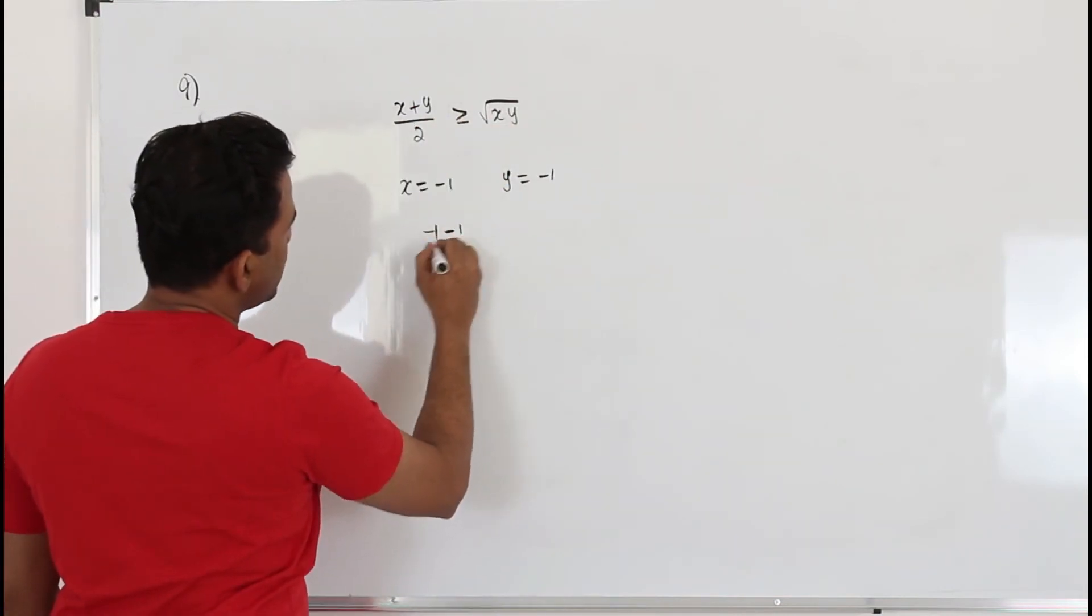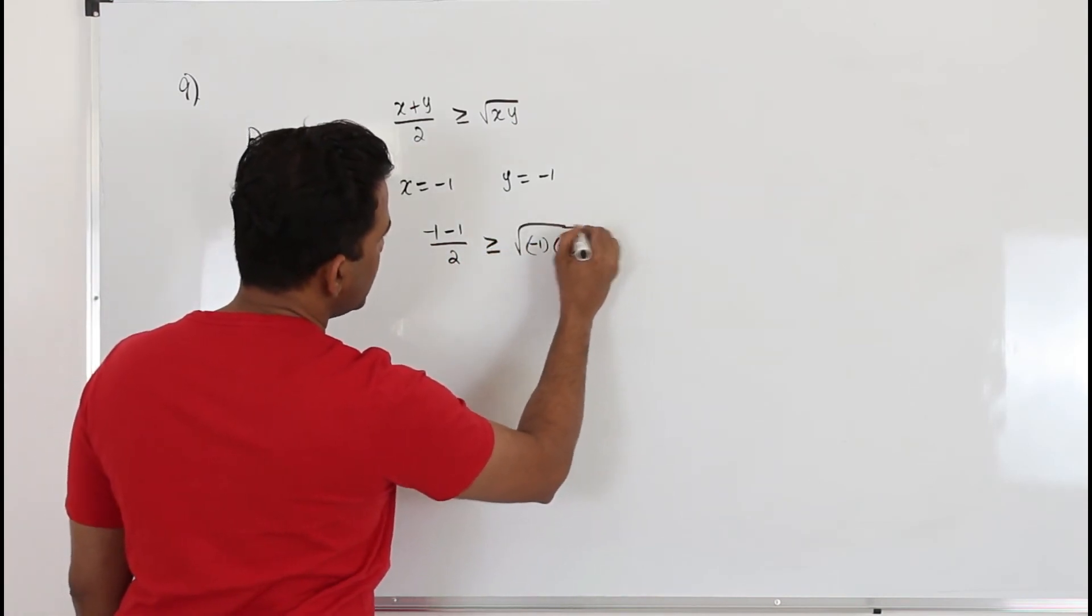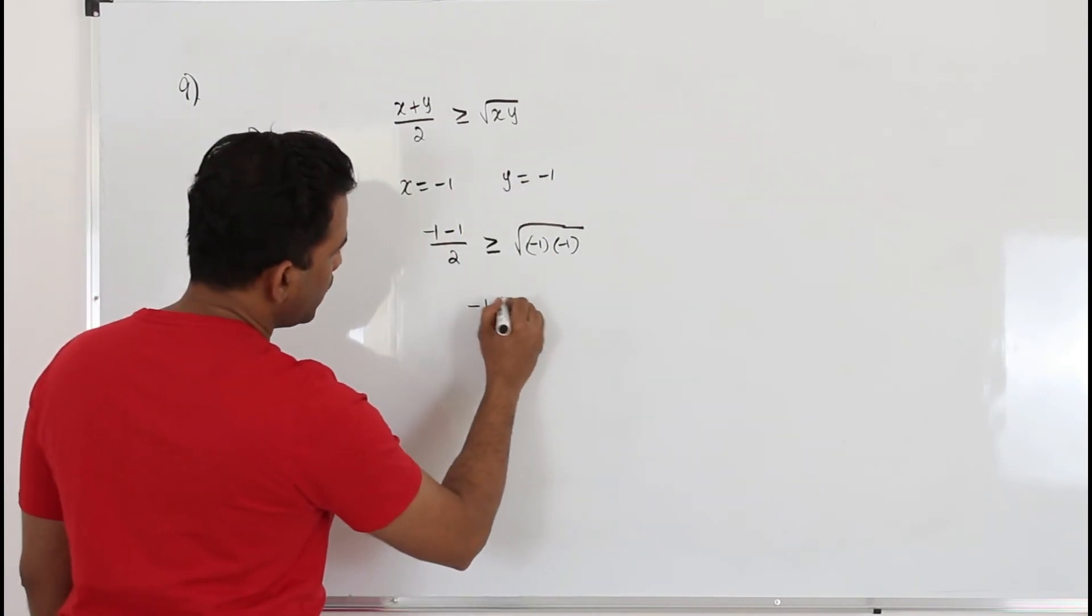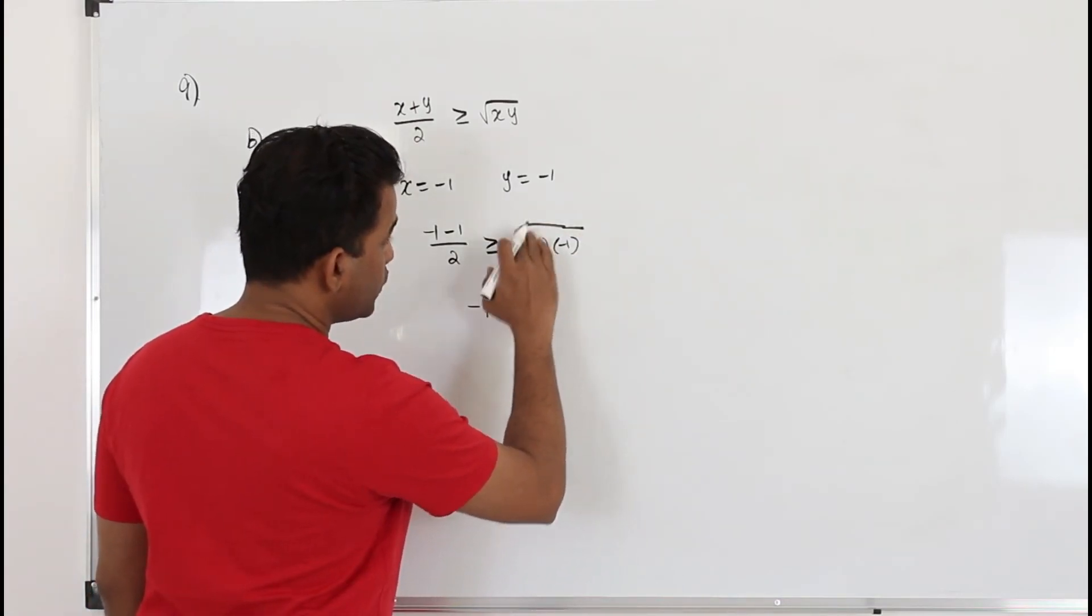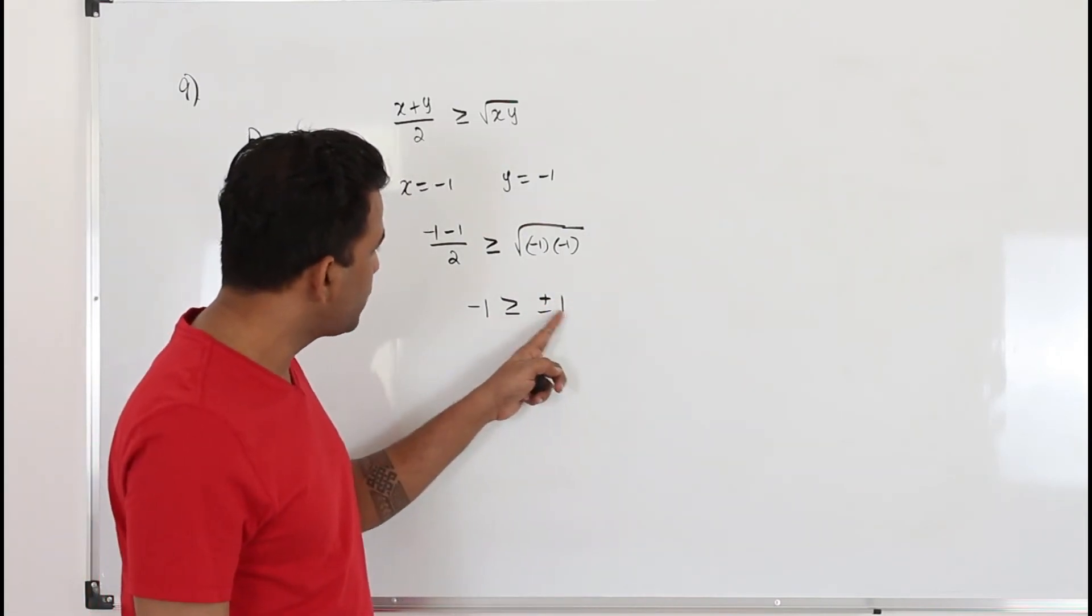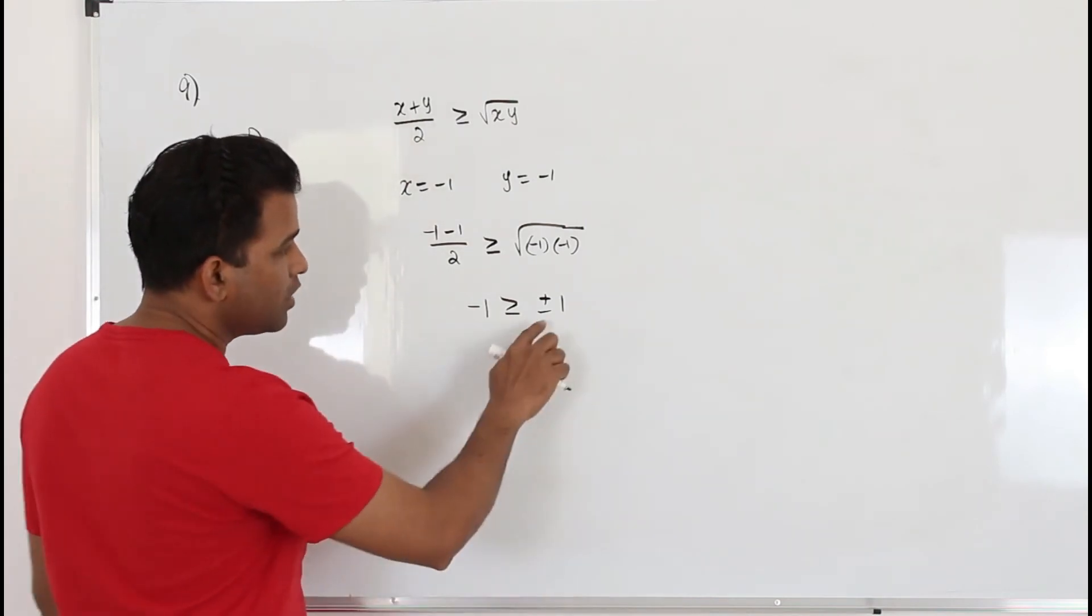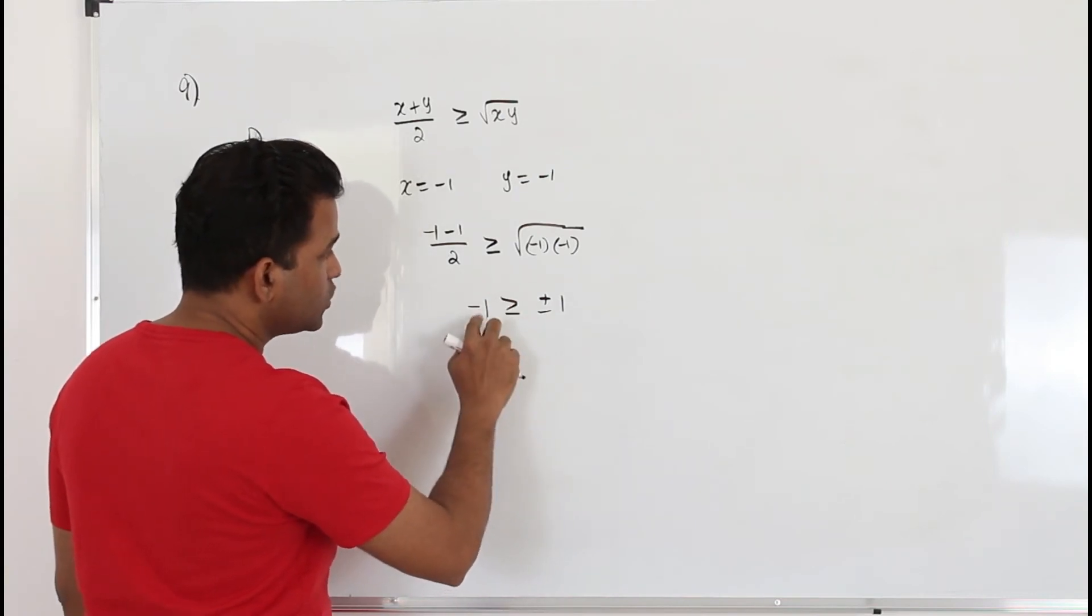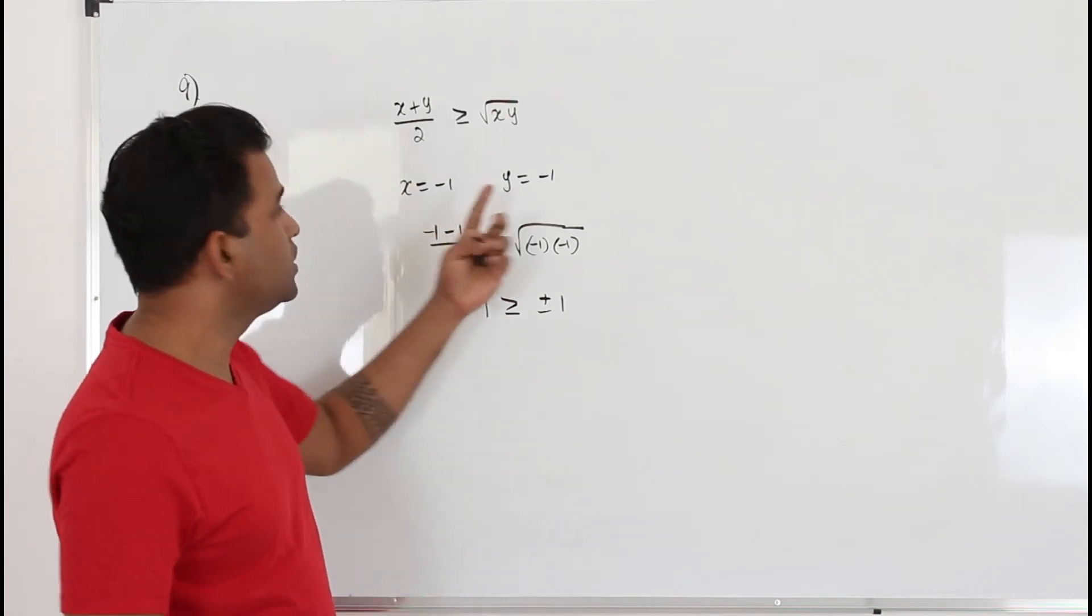Minus 1 minus 1 divided by 2 is square root of minus 1 times minus 1. Replace x by minus 1, y by minus 1. This will be minus 2 by 2 is negative 1. And when you find the square root of minus 1 times minus 1 positive 1, square root of 1 is plus or minus 1. So if you look at it carefully, if you take plus 1 the inequality is not true. But if you take minus 1, this can be greater than or equal to. There is equal to sign also. So minus 1 is equal to minus. So we can't really prove by using these two numbers.